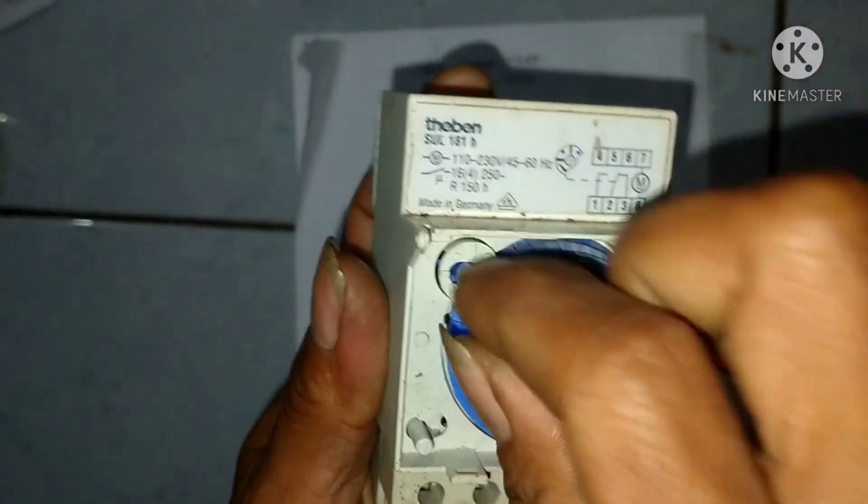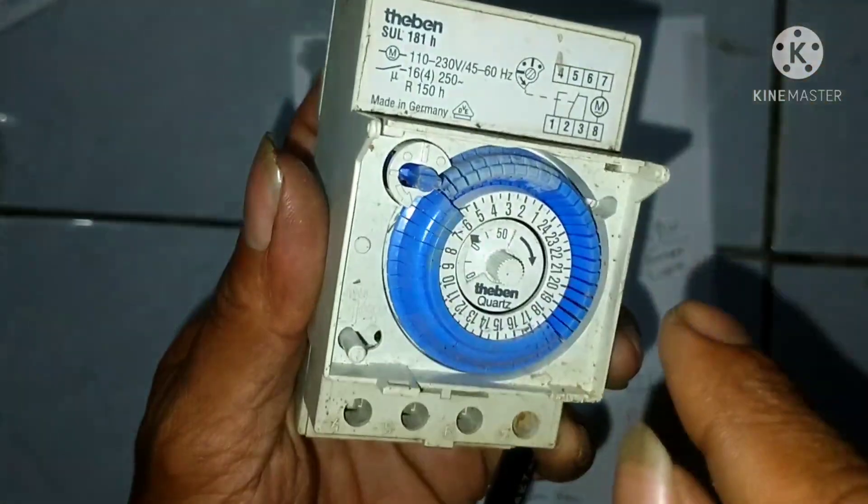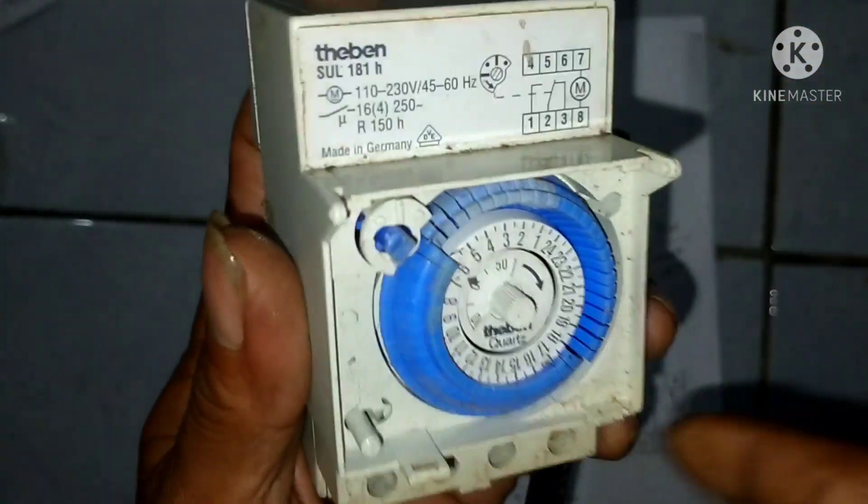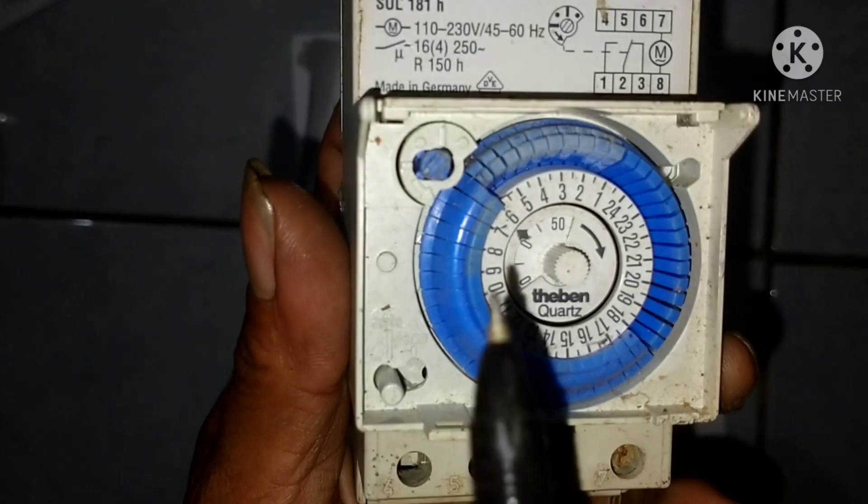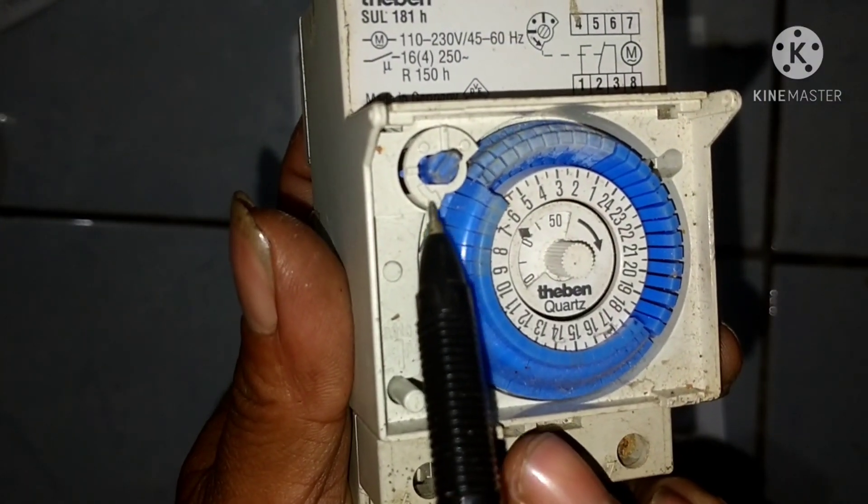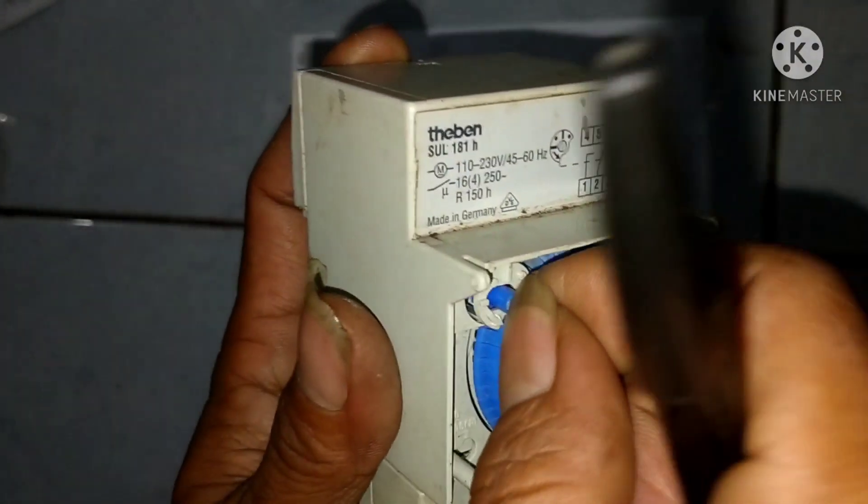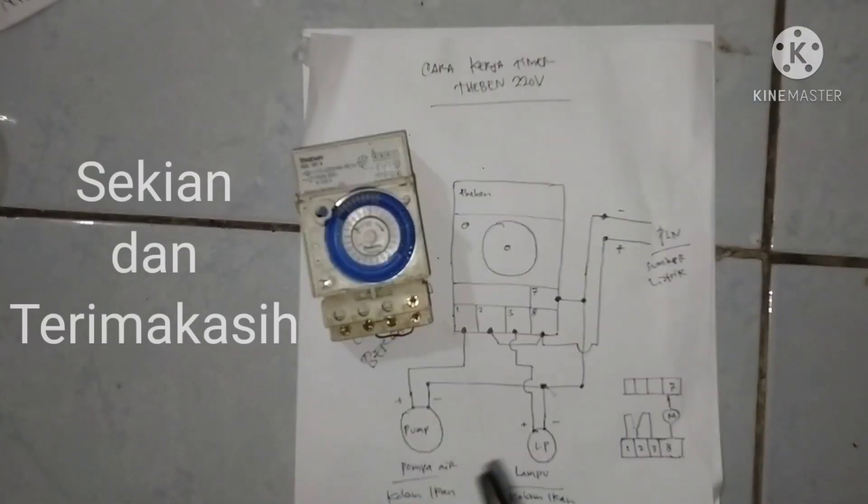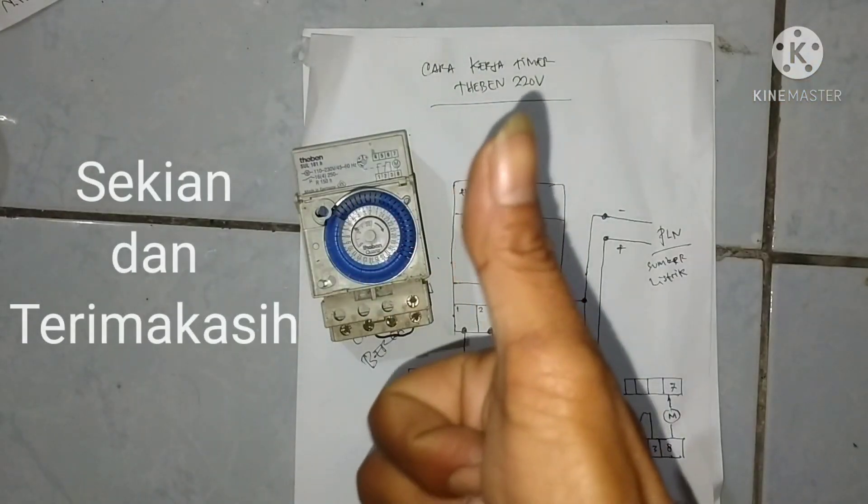Nah kalau ini buat manual. Bilamana terlalu lama kita mau matikan atau menyalakan buat percobaan, bisa kita manual dengan cara memutar tuas ini ya, tuas kecil yang di ujung-ujung atas kiri.